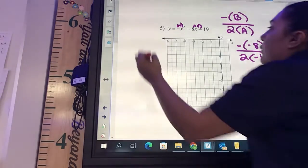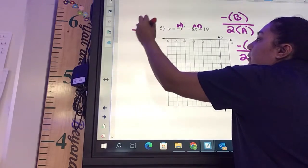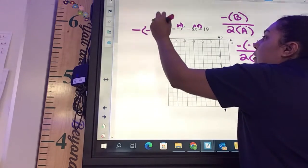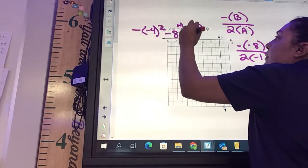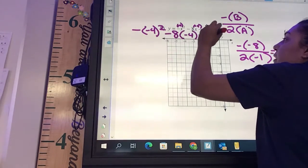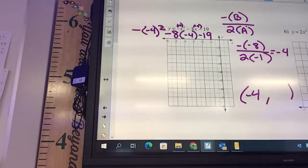So, but if you do want to write it all out, it's going to look like negative, negative four squared, minus eight, times negative four, minus 19. Okay, there's a lot of negatives in parentheses.